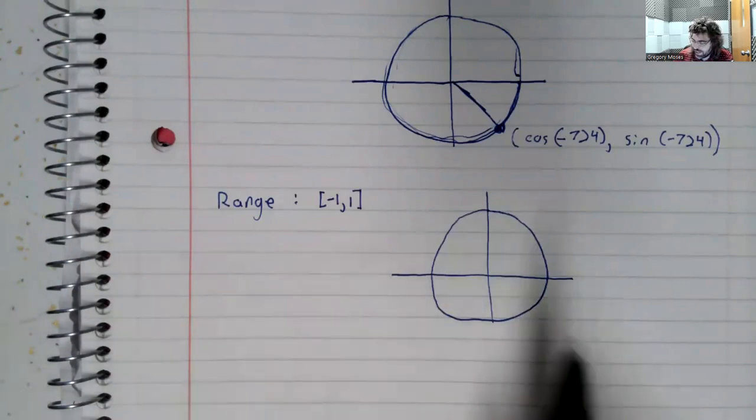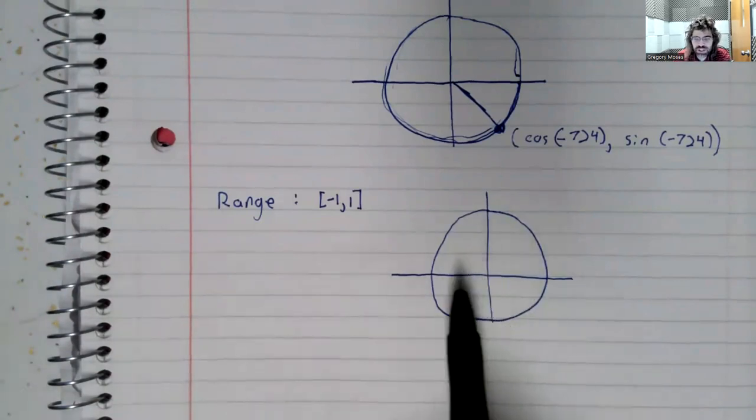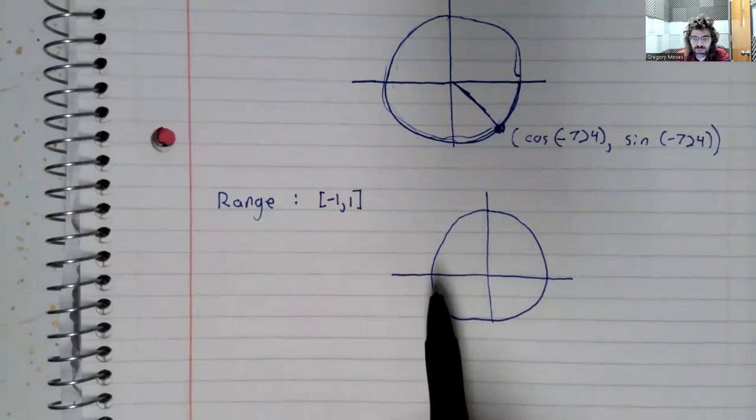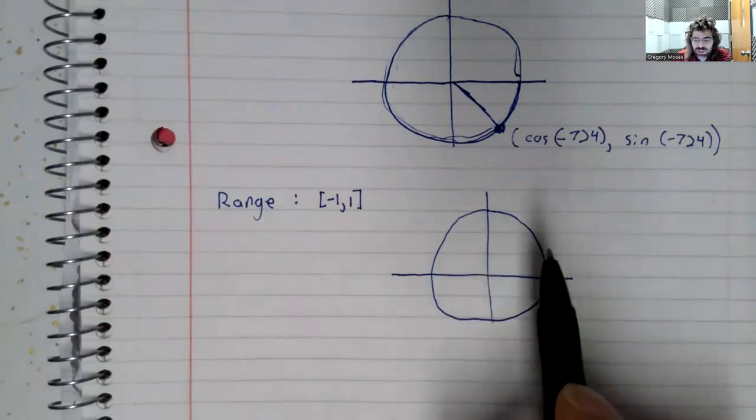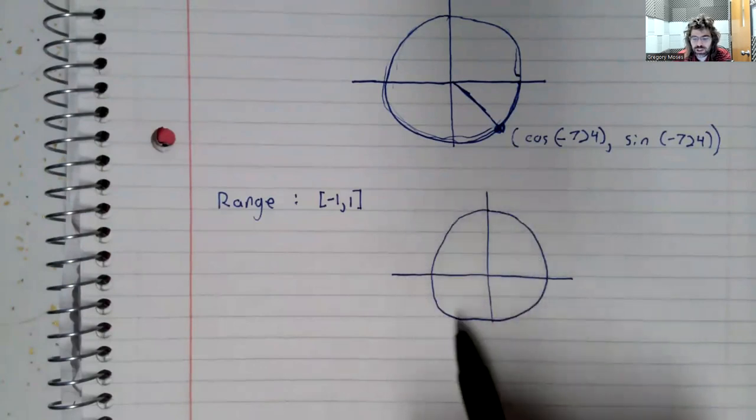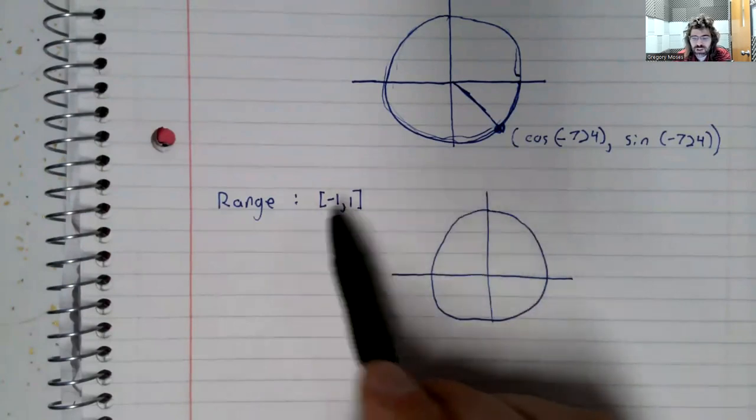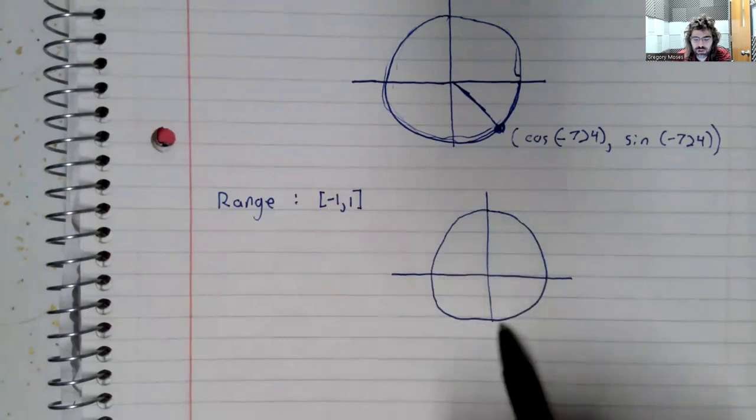Here's an extremely lumpy unit circle. And you take the sine and the cosine of any number, and it's the x-coordinate for the cosine of a point on this circle. For the sine, it's the y-coordinate of a point on the circle.